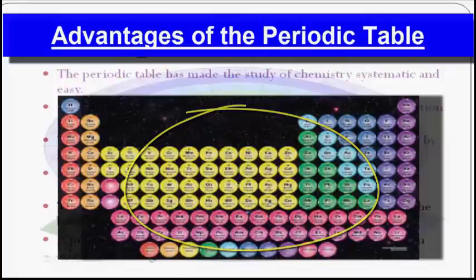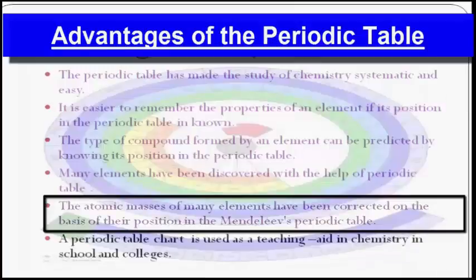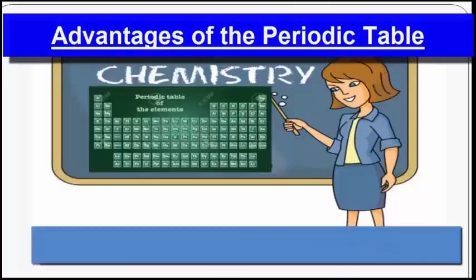The next advantage is that the atomic masses of many elements have been corrected on the basis of their positions in Mendeleev's periodic table. Last but not least, a very important and practical advantage is that the periodic table chart is used as a teaching aid in chemistry classes in schools and colleges. Thank you.